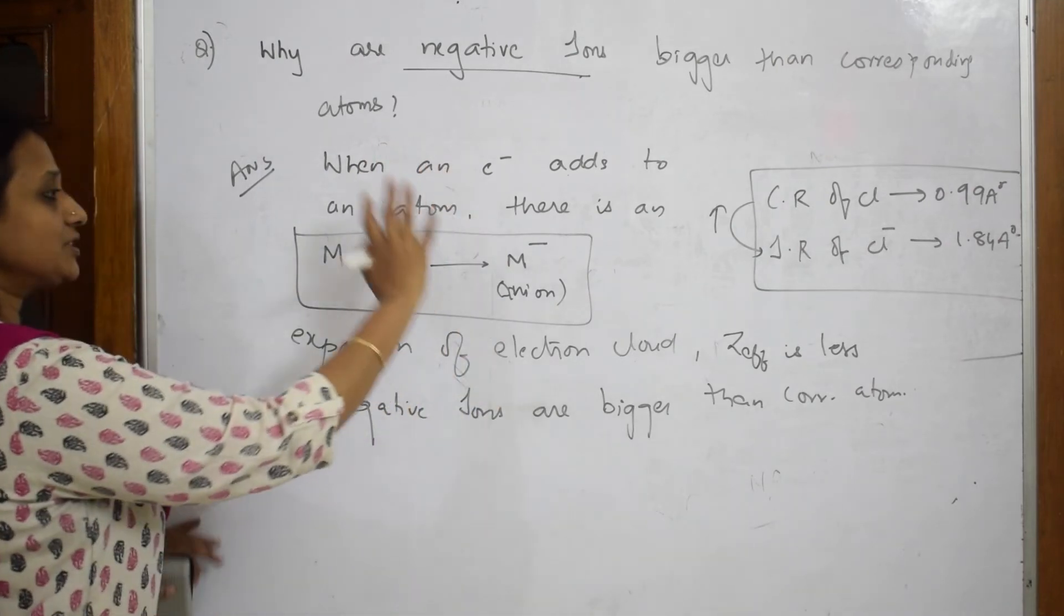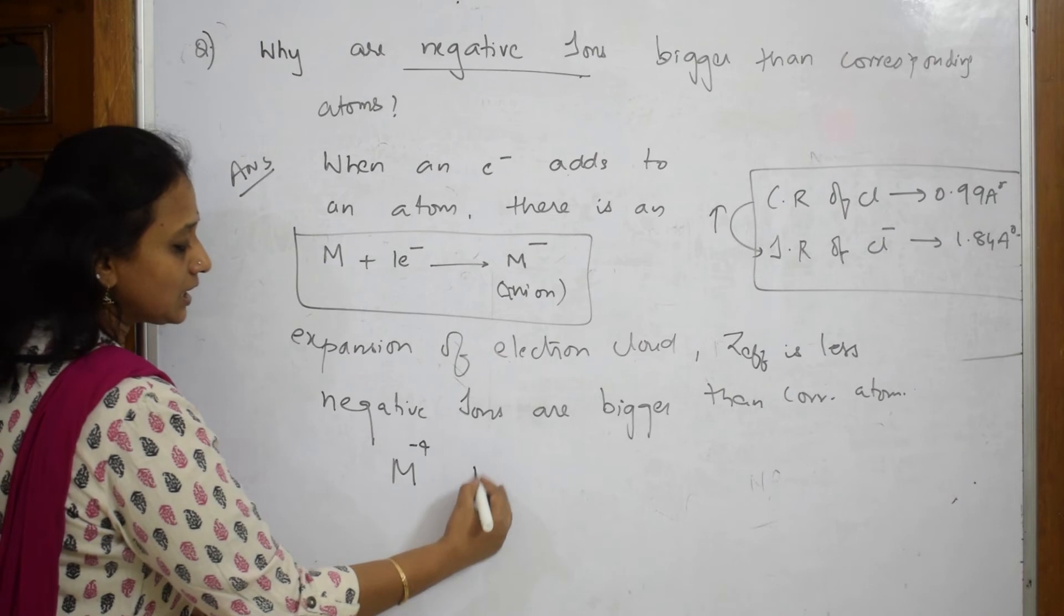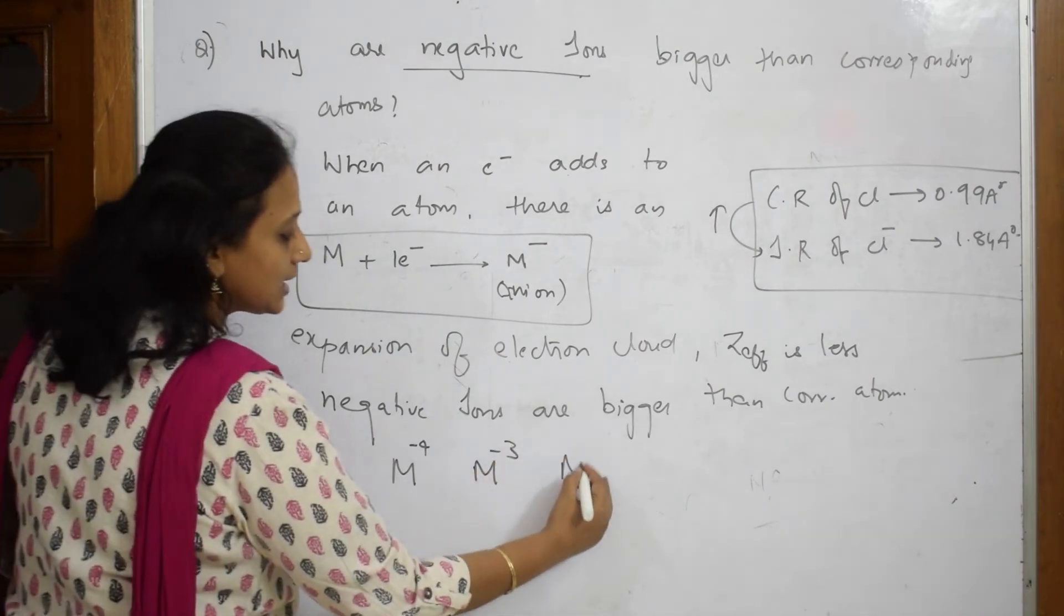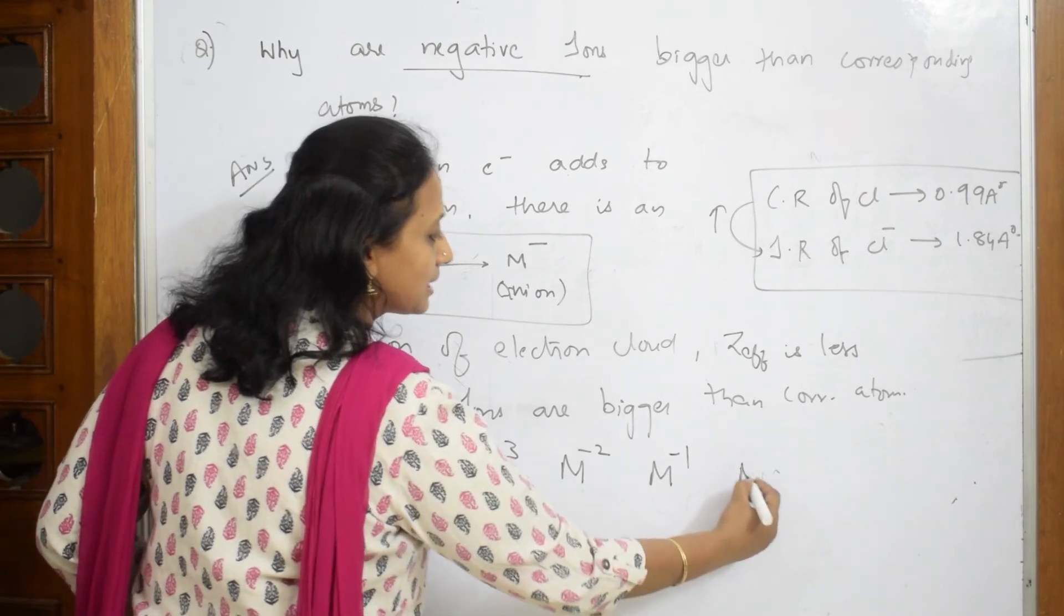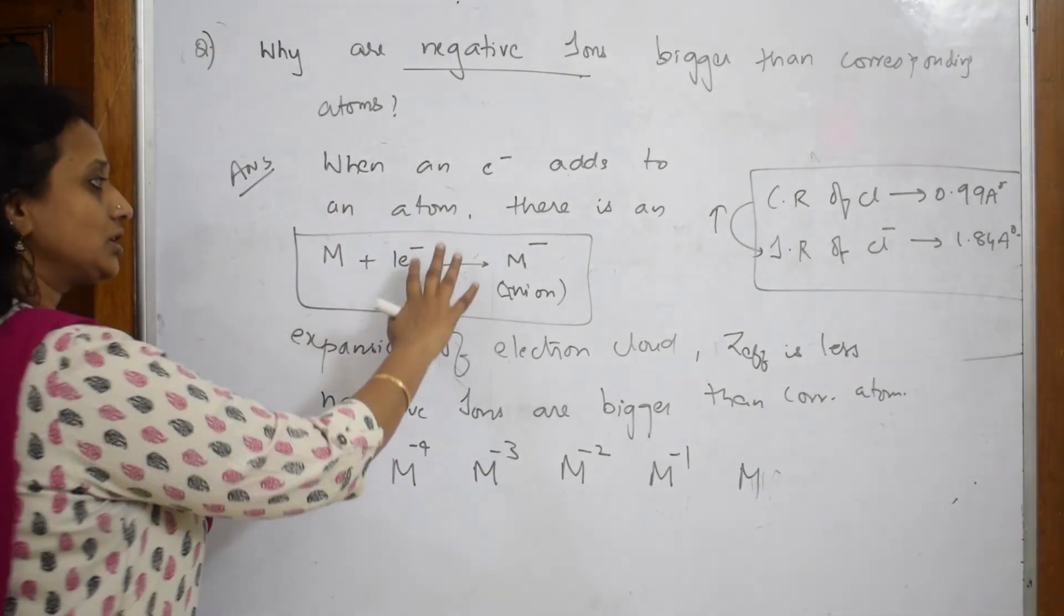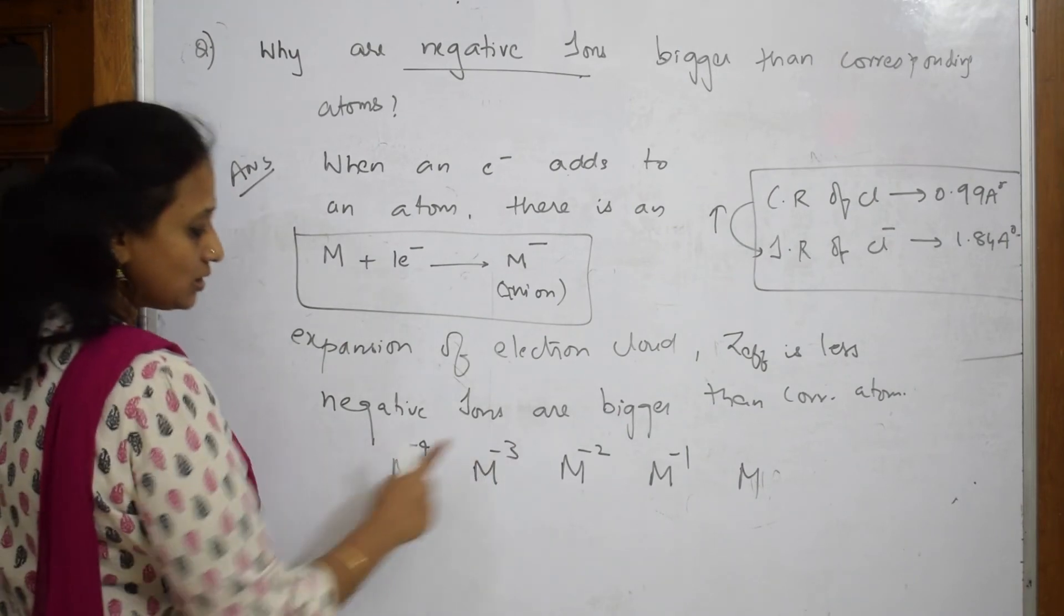So I'm justifying the whole answer with this. Now I have M^4-, then M^3-, then M^2- anion, then M^1- anion, then the metal. Now tell me the order according to this. The anion would be larger. So among all these, this is the largest anion.